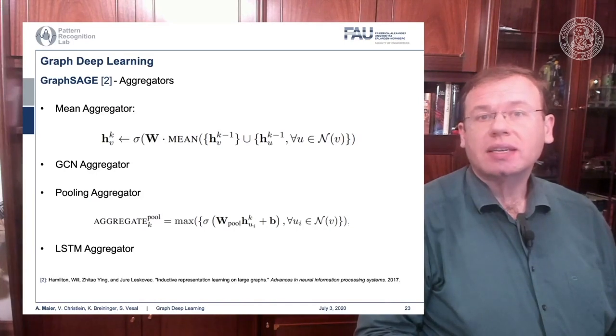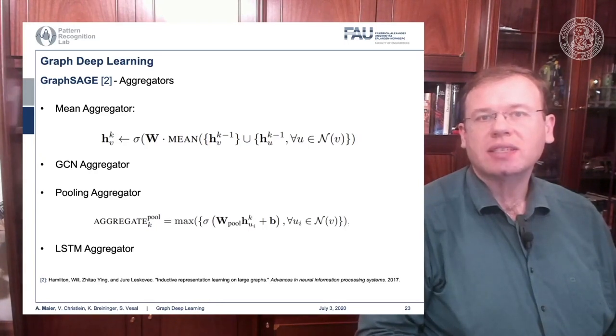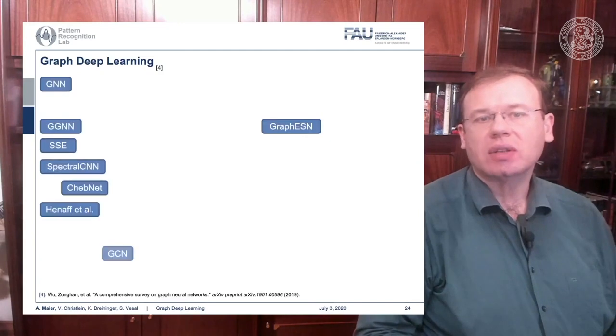The concept of aggregators is key to developing this algorithm. In every node you may have a different number of neighbors. A very simple aggregator would be computing the mean. You can also take the GCN aggregator, which brings us back to the spectral representation, establishing the connection between spatial and spectral. You can take a pooling aggregator using maximum pooling, or use recurrent networks like an LSTM aggregator.